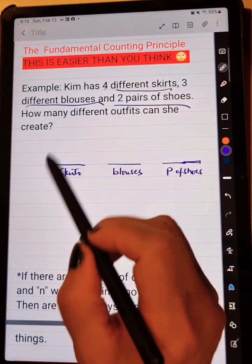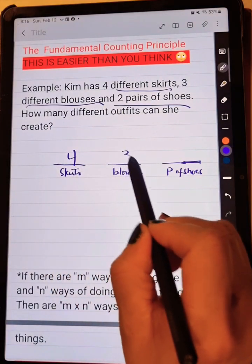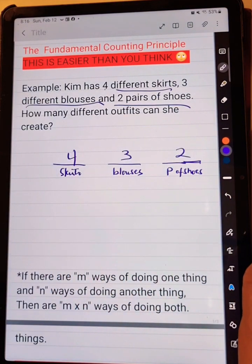Now, how many choices do we have for skirts? We have four, three for blouses, and two for pair of shoes.